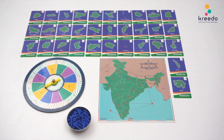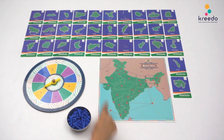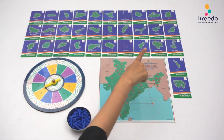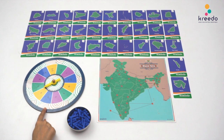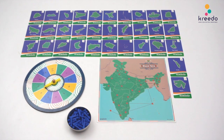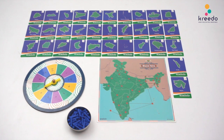This is an individual game. Place the Bharat Yatra chart and spread all state cards in front of the child. Place the number roulette and skittles in a bowl next to the Bharat Yatra chart. The child can select any starting point and randomly move in any direction based on the number the roulette lands on.